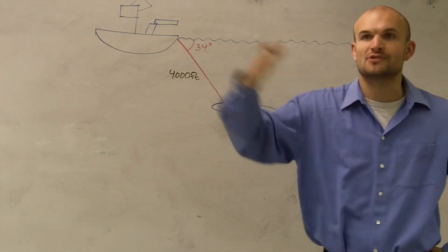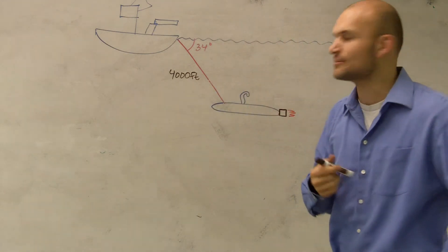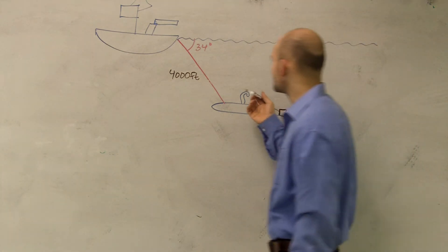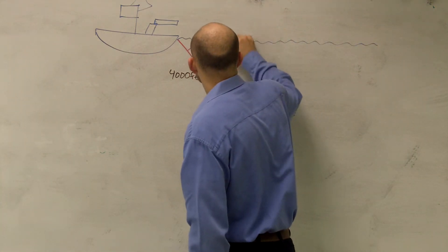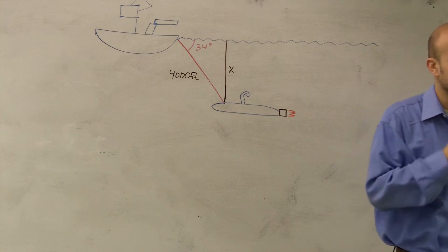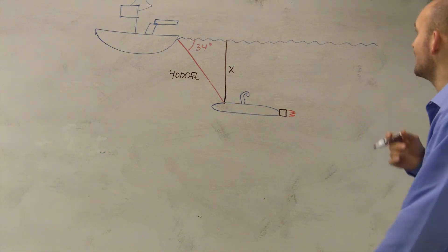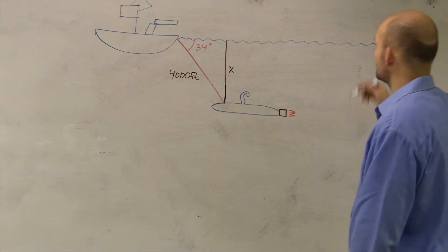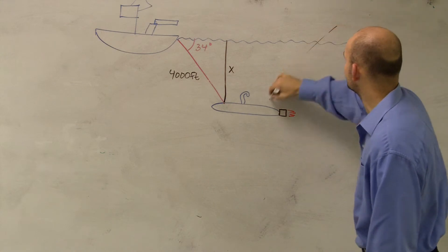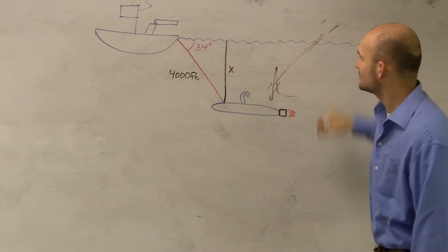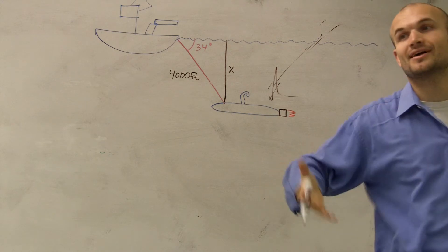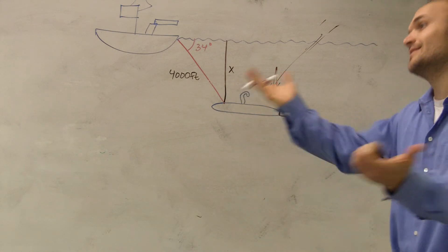From where they hit the sonar and then it comes back, they can detect it's like 4,000 feet deep. So what they want to do is they actually want to know how deep is the submarine from the surface of the water. Because they're probably going to have some other ship come in and go get them. No, that's a whole different angle — you can't shoot a missile underwater.